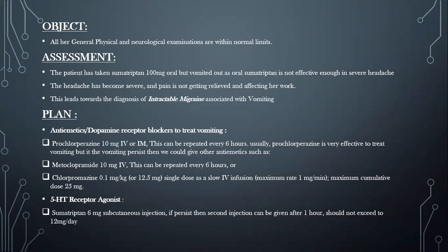Moving towards treatment: since she is suffering from vomiting as well, we need to give her antiemetics or dopamine receptor blockers. Our first choice is prochlorperazine 10 mg IV or IM, which can be repeated every six hours. Prochlorperazine is usually very effective and sufficient to treat vomiting, but if vomiting persists, we could also give other antiemetics such as metoclopramide 10 mg IV or chlorpromazine 0.1 mg/kg.